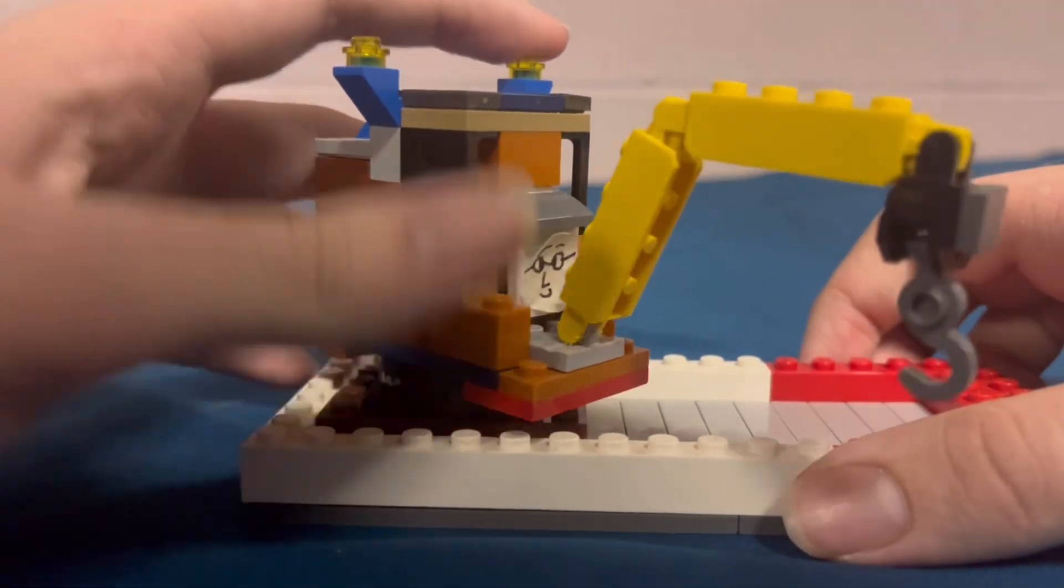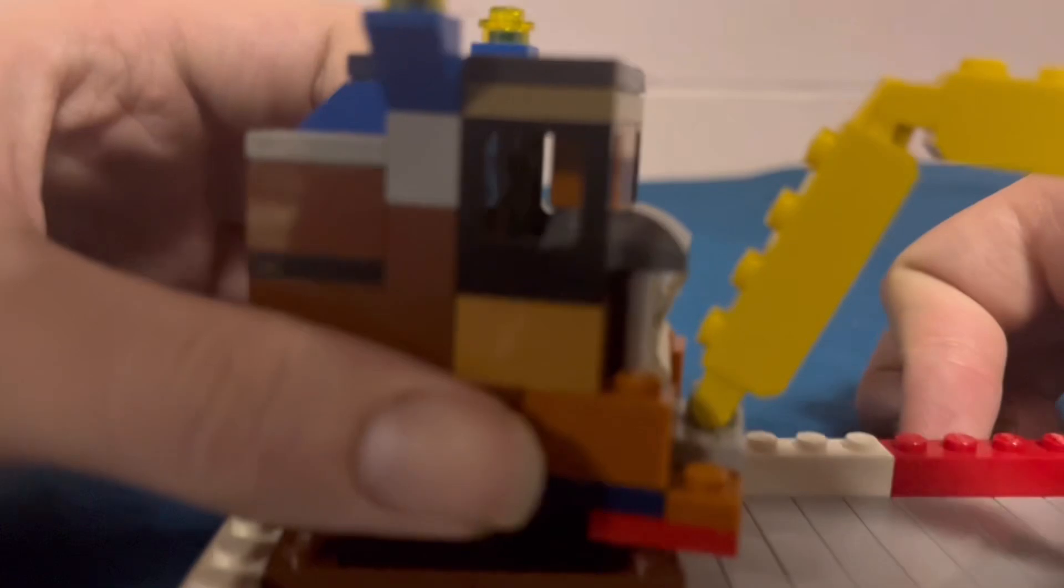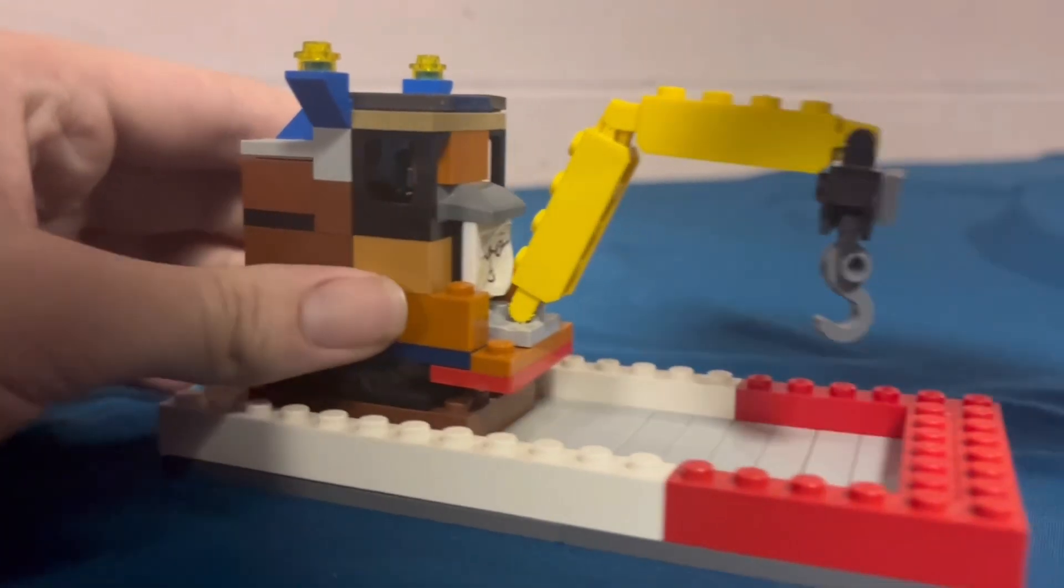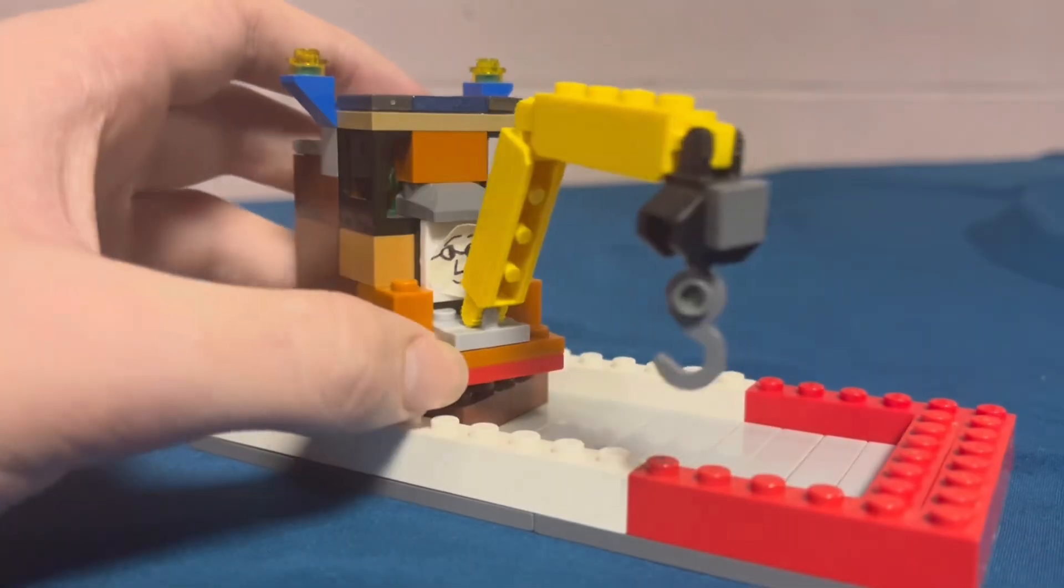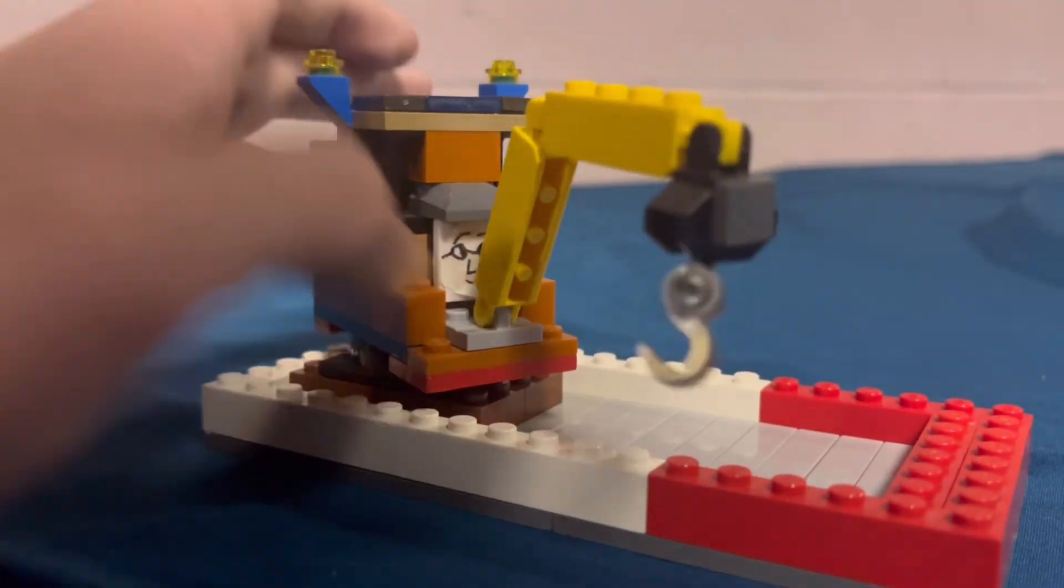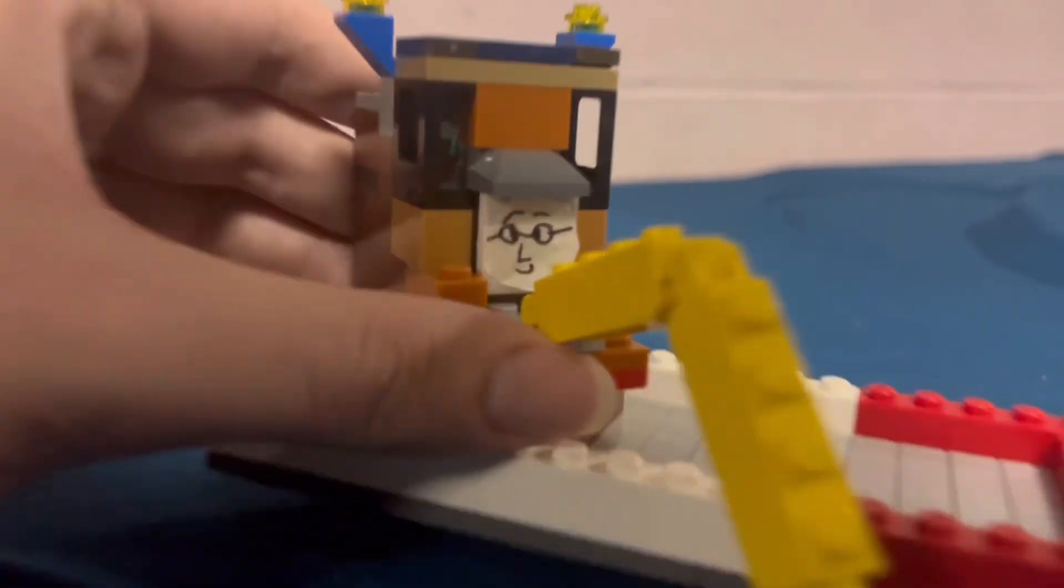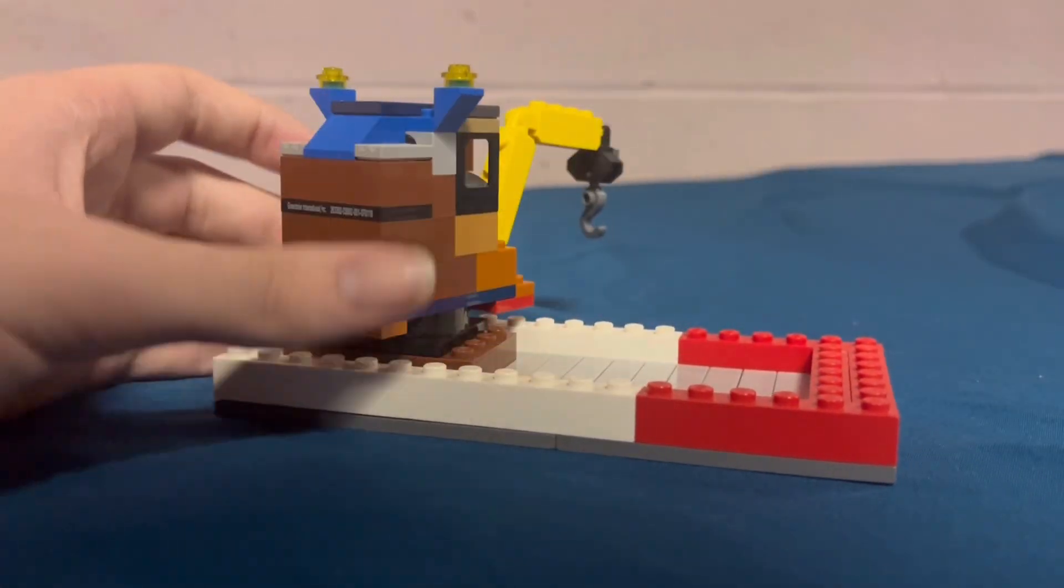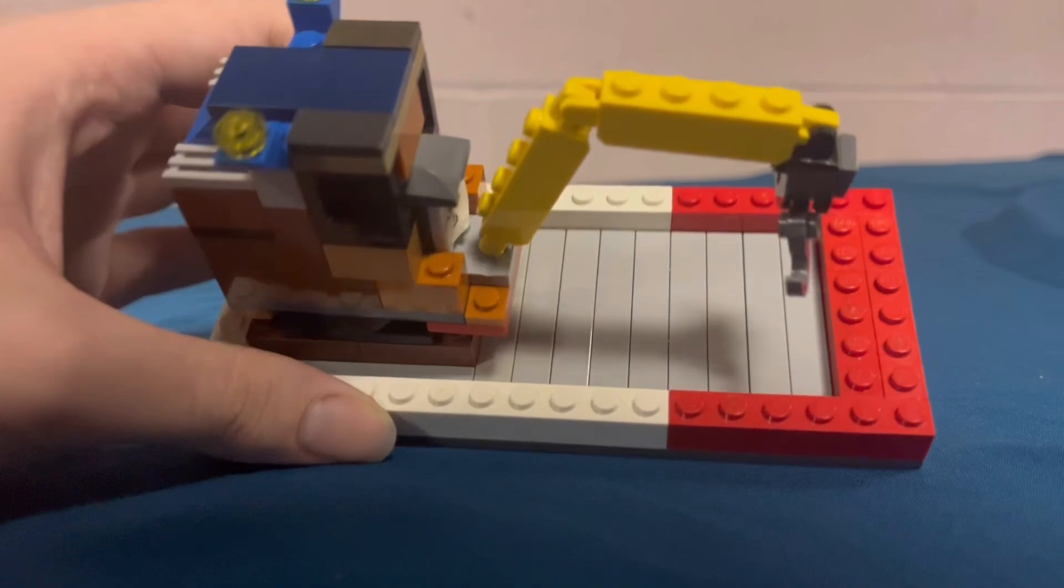We got the two lights up here. We even got a little mini fig, teensy tiny figure in there. There's his face. He's got little glasses and all that. And, yeah. One of my favorite builds.